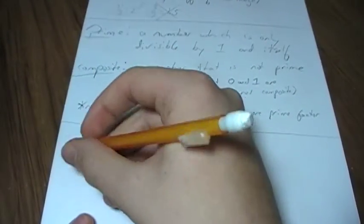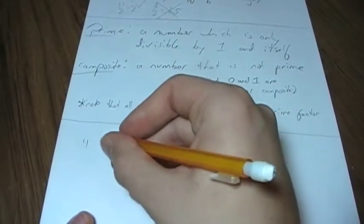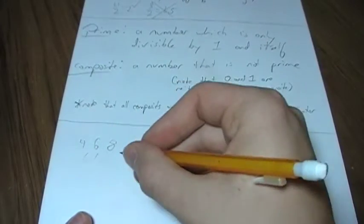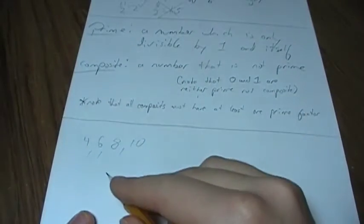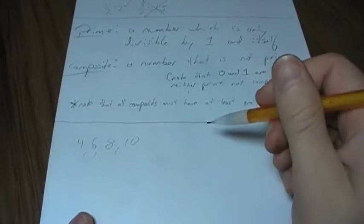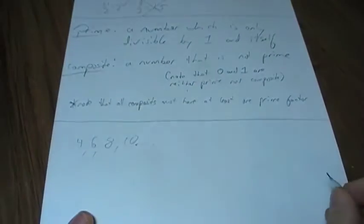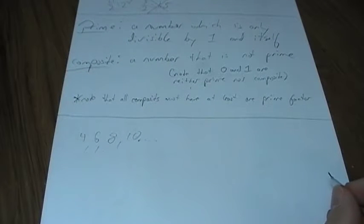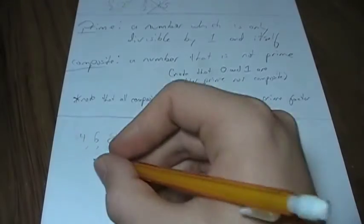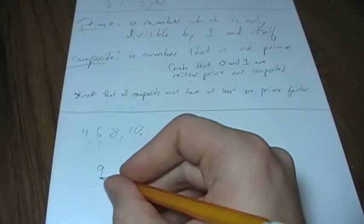Now, composites are pretty boring. Every single even integer other than 2 is going to be a composite because it's going to be divisible by 1, itself, and 2 since it's even. Since there's infinitely many even numbers, there's also infinitely many composite numbers. But what about primes? You can't just say an odd number is going to be prime. 9 is odd but it's not prime. It's divisible by 3.